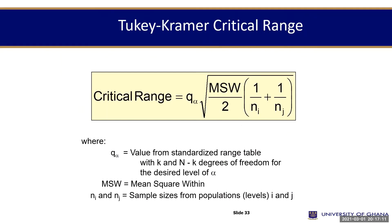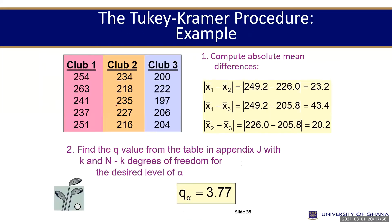If we are using the Tukey-Kramer critical range, we are being asked to find this guy here, Q-alpha. We already know MSW, so that is not a problem for us. We are only going to find first of all the Q-alpha and substitute it into this whole formula here to give us what we call critical range. Then again, we need to find the absolute mean differences.